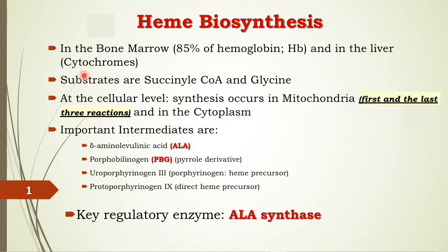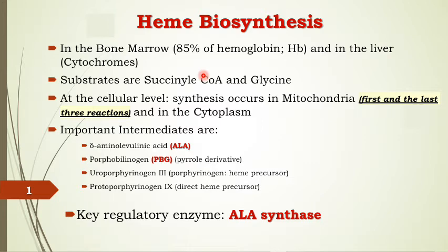The substrates or precursors for biosynthesis of heme are succinyl CoA and glycine. We studied succinyl CoA in the citric acid cycle (Krebs cycle) in carbohydrate metabolism. Succinyl CoA is an intermediate organic acid that arises inside the Krebs cycle. One function of succinyl CoA is heme synthesis; another function is ketolysis.